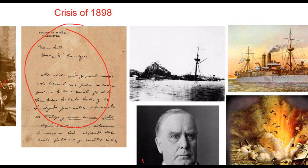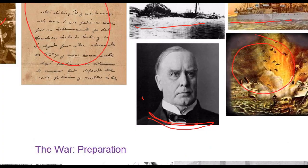Just a few days later, another incident sealed the fate of the relationship between the United States and Spain. The battleship Maine was destroyed in a violent explosion in Havana Harbor on February 15th. The U.S. suspected Spanish sabotage or an attack of some sort. This put enormous pressure on McKinley and Congress to respond, and McKinley was forced to go to Congress in April 1898 and ask for a declaration of war against Spain.